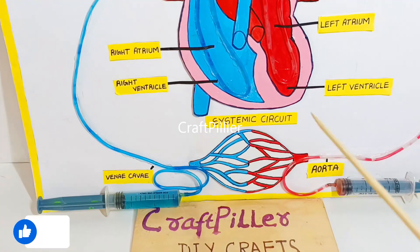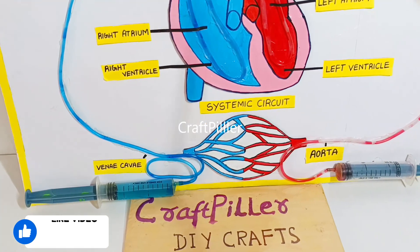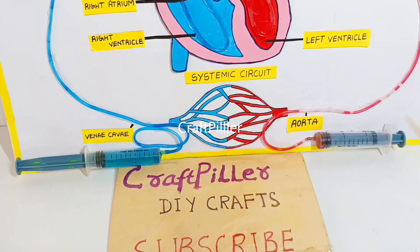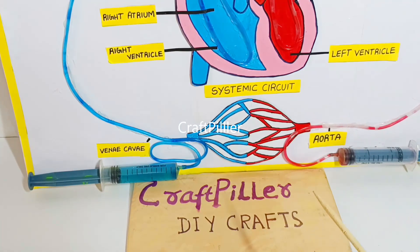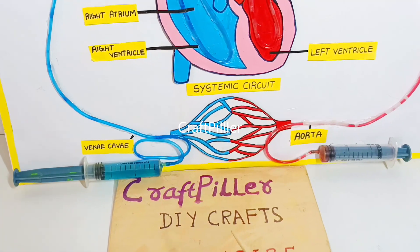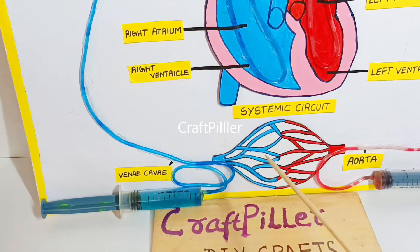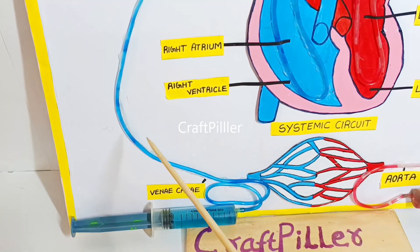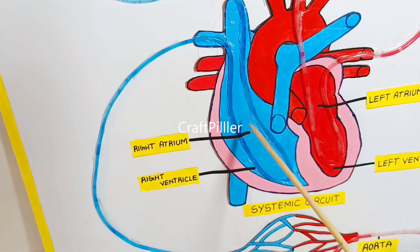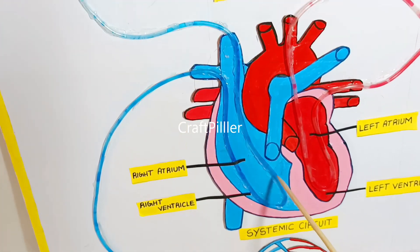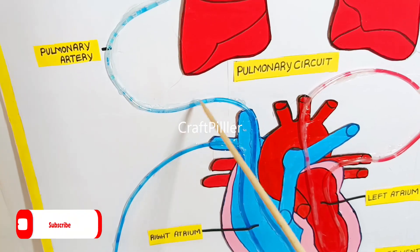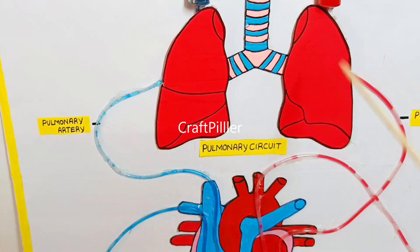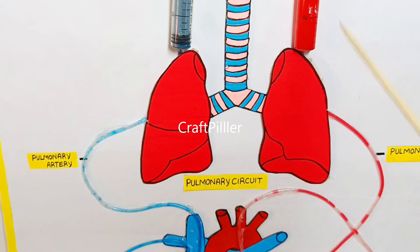The oxygenated blood reaches the body's cells, and those cells absorb the oxygen that the blood contains. Once the oxygen is absorbed, the blood becomes deoxygenated again. That deoxygenated blood moves via the vena cava to the right atrium, then to the right ventricle.